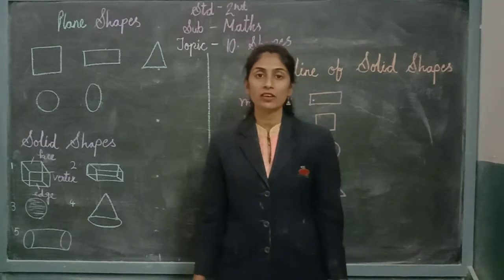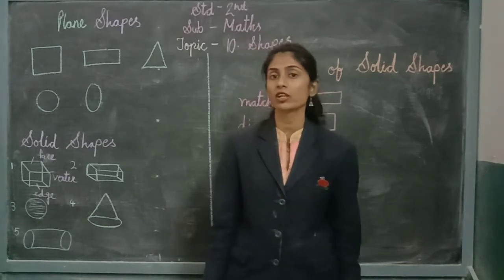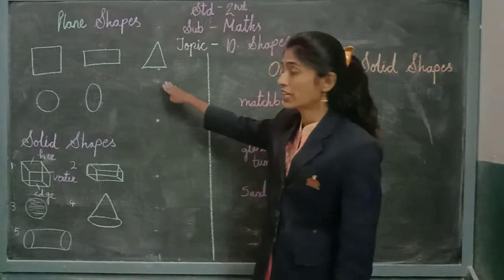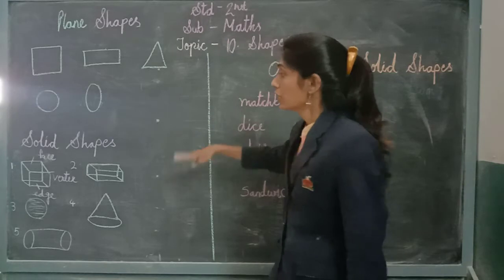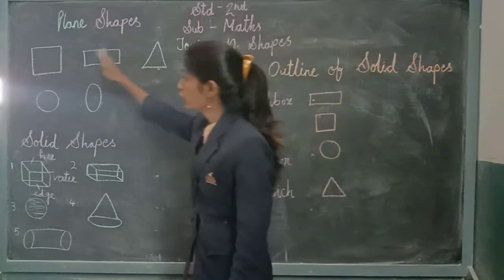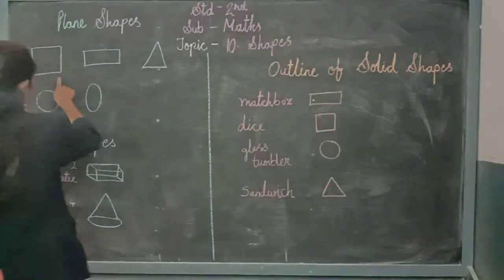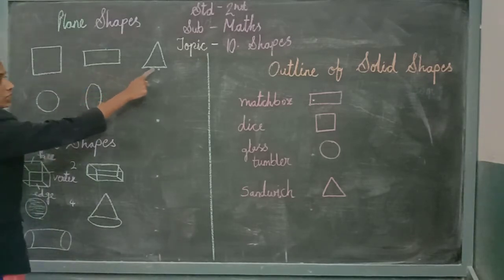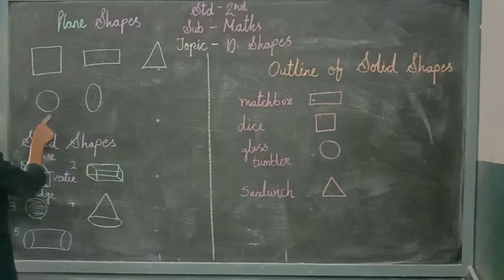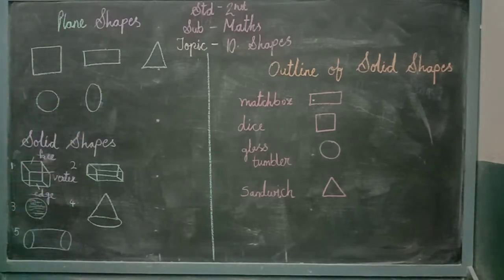Hello students. As we have started a new chapter on shapes, today we are going to learn something about plane shapes. You all might have learnt about plane shapes. I have drawn some plane shapes — you can see one square, a rectangle, a triangle, a circle, and an oval. Let us learn something more about plane shapes.